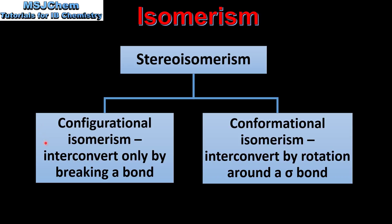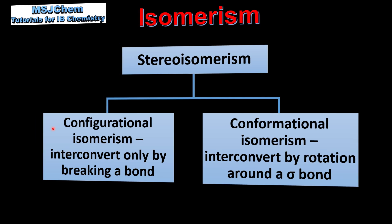Configurational isomers interconvert only by breaking a bond. In this type of isomerism there is restricted rotation, either by a carbon-to-carbon double bond or a cyclic structure. The higher-level course focuses mainly on this type of isomerism.